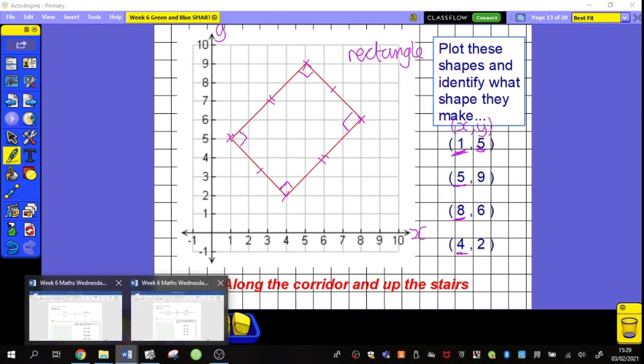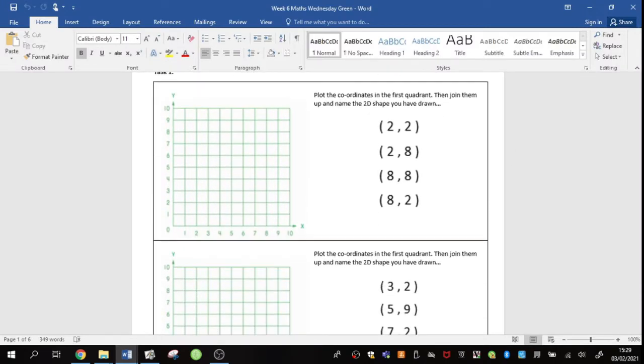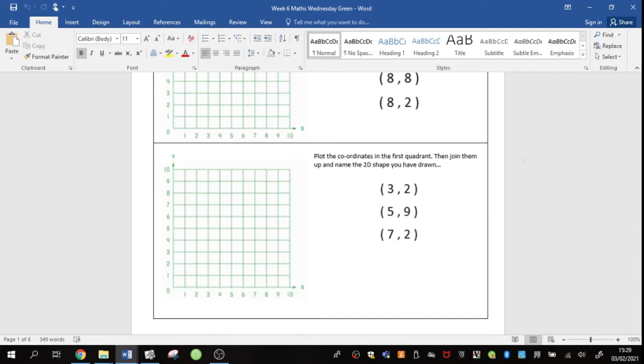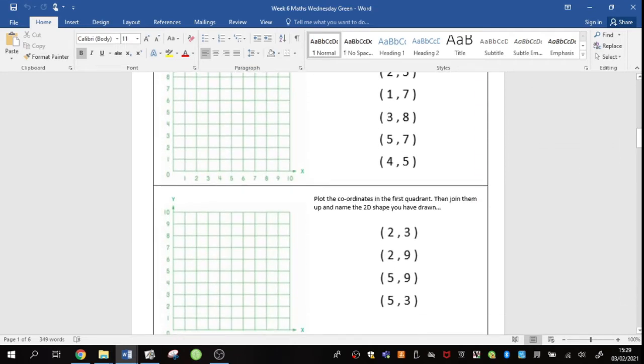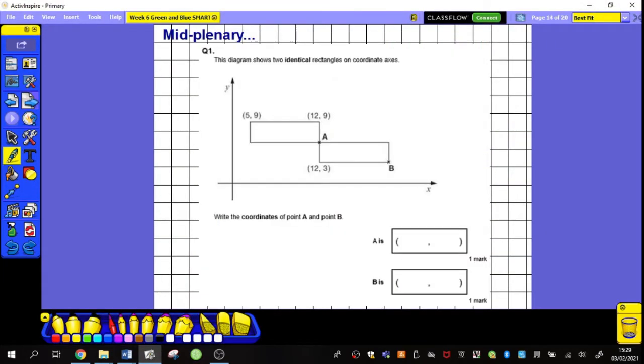Your job now, I'd like you to have a go at task one, plotting the coordinates in the first quadrant and naming the 2D shape that you have drawn. Right, okay. You'll notice now that next task two is problems. Using your coordinates knowledge to solve problems. And you'll see that, in most of these problems, the grid has completely gone.